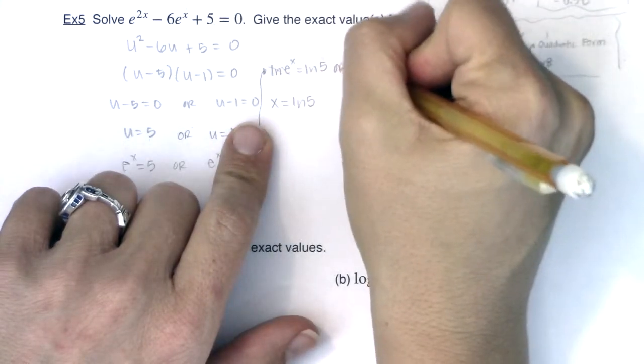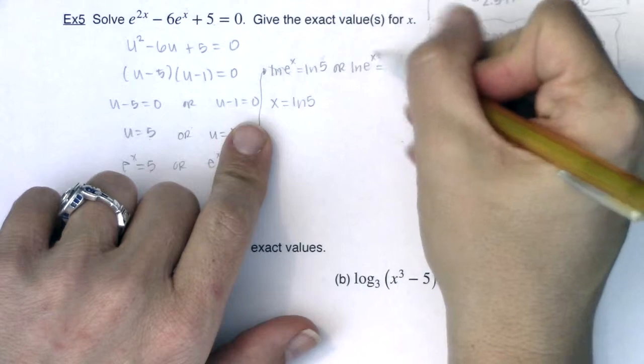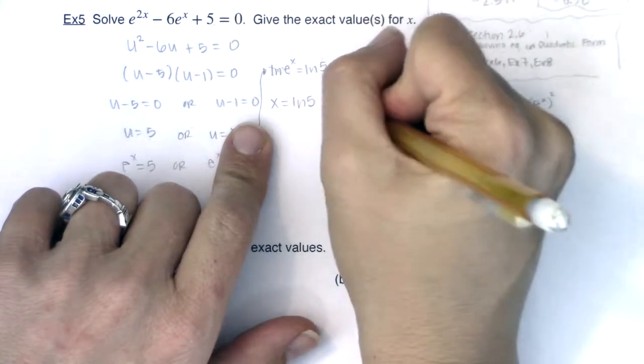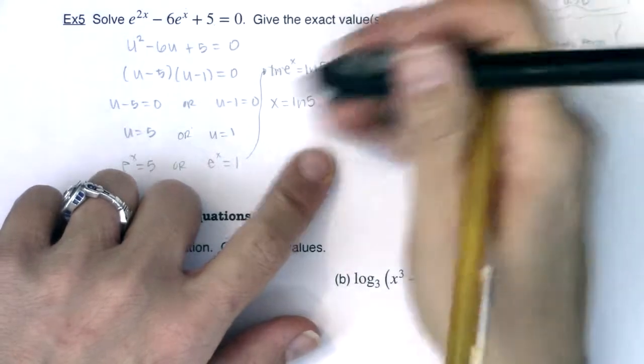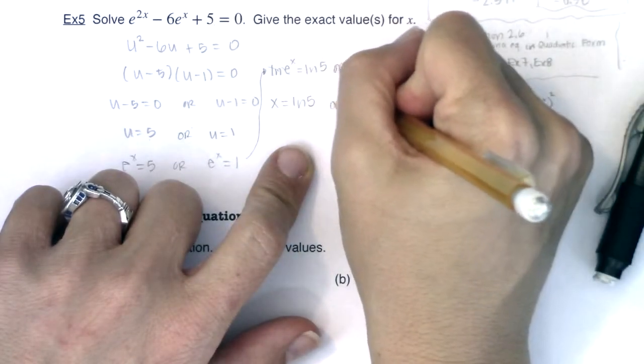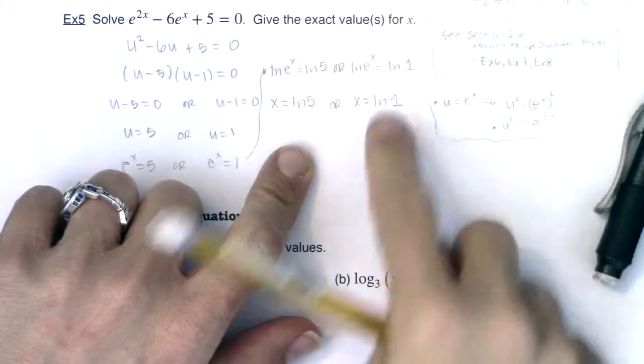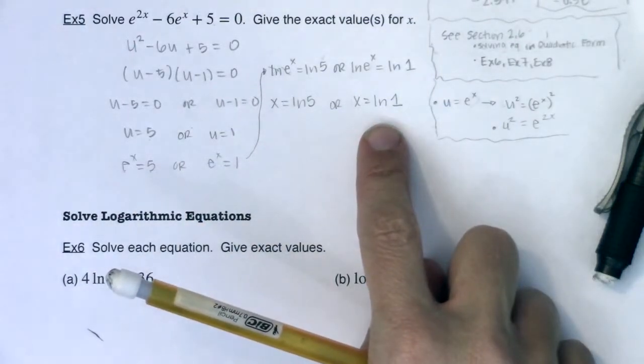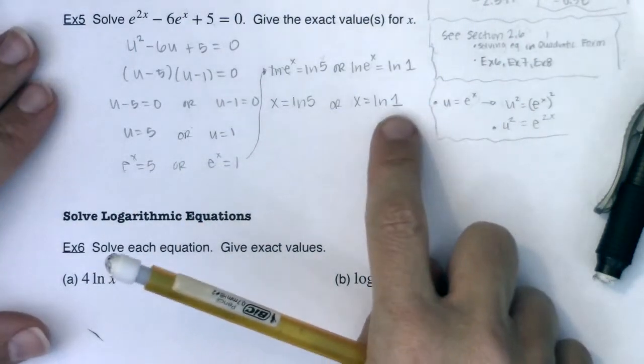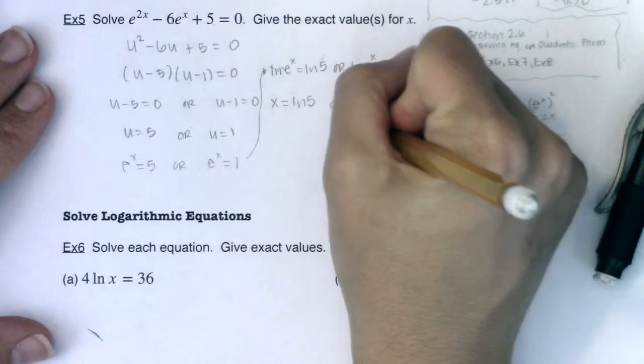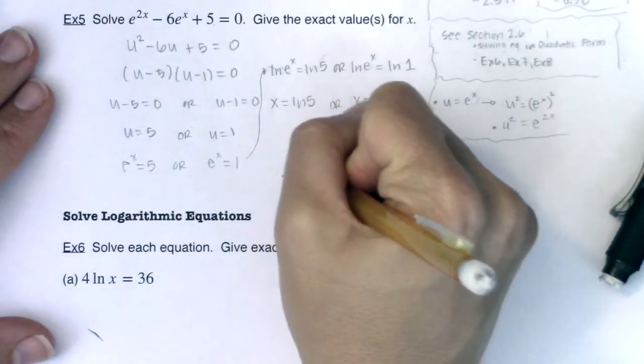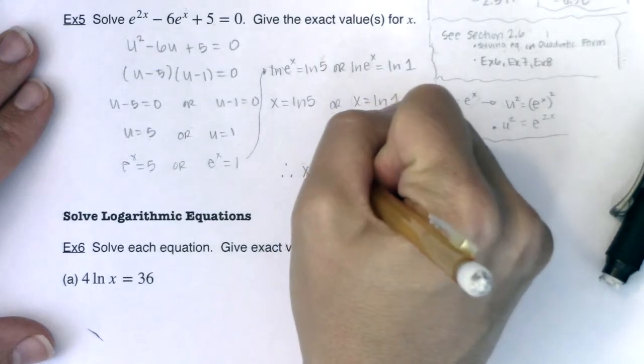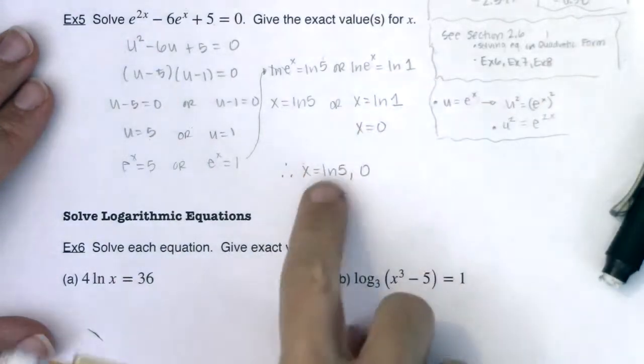So here I get x is equal to ln 5. Same thing here. The base of my logarithm is e. The base of my power is e. The only thing that's going to survive is the exponent. So here I will get x is equal to the natural log of 1, and I'm hoping the natural log of 1 rings a bell. Anytime your argument is 1, you know x is equal to 0.